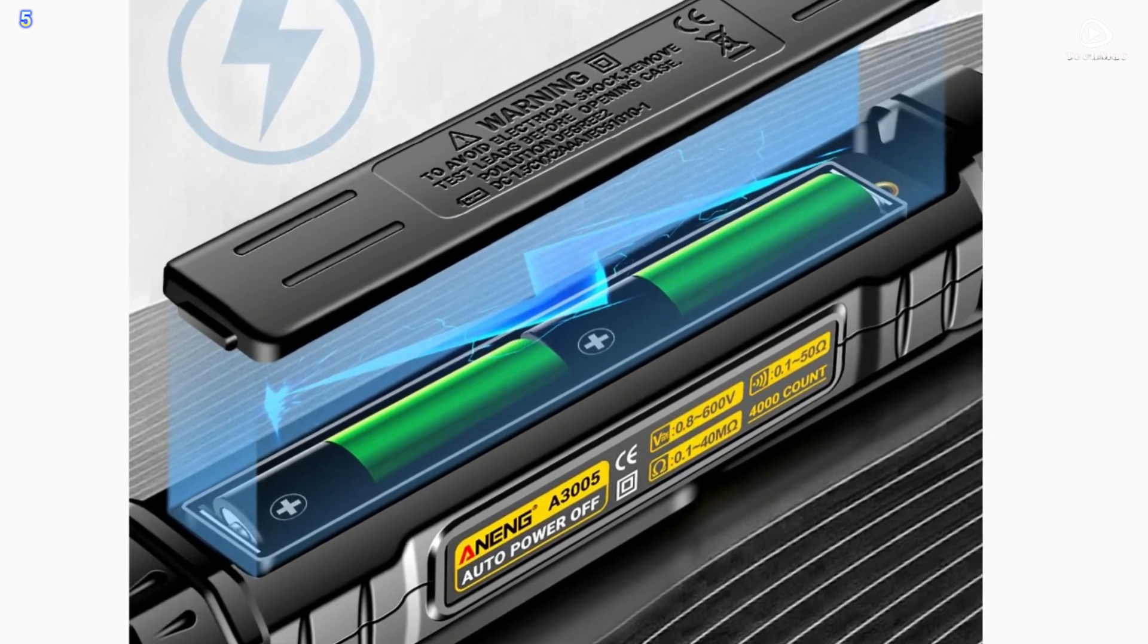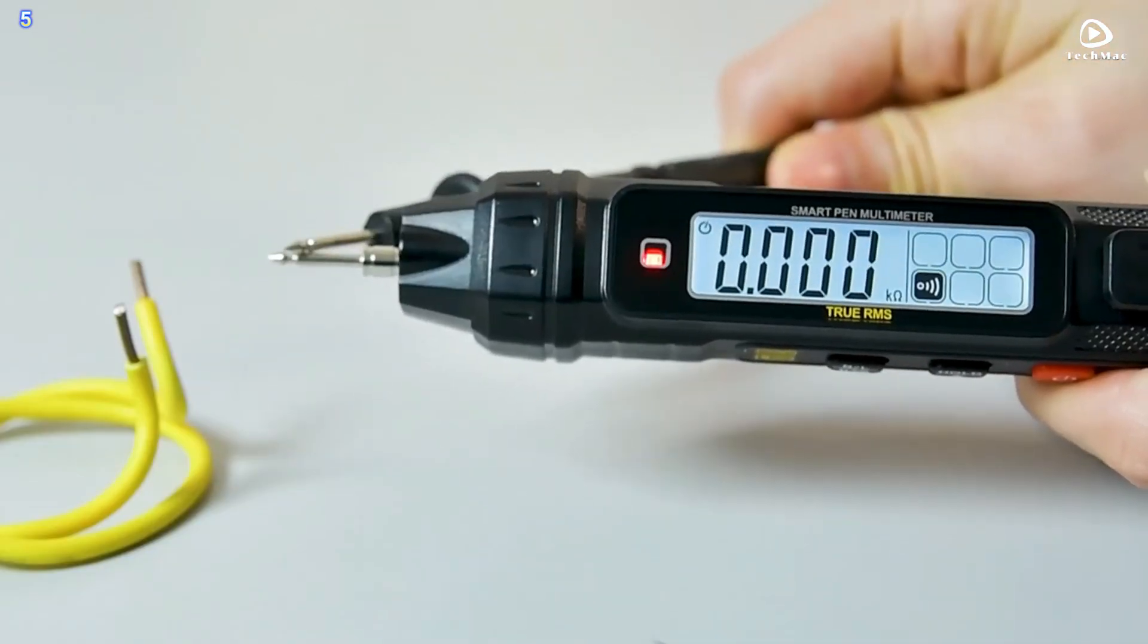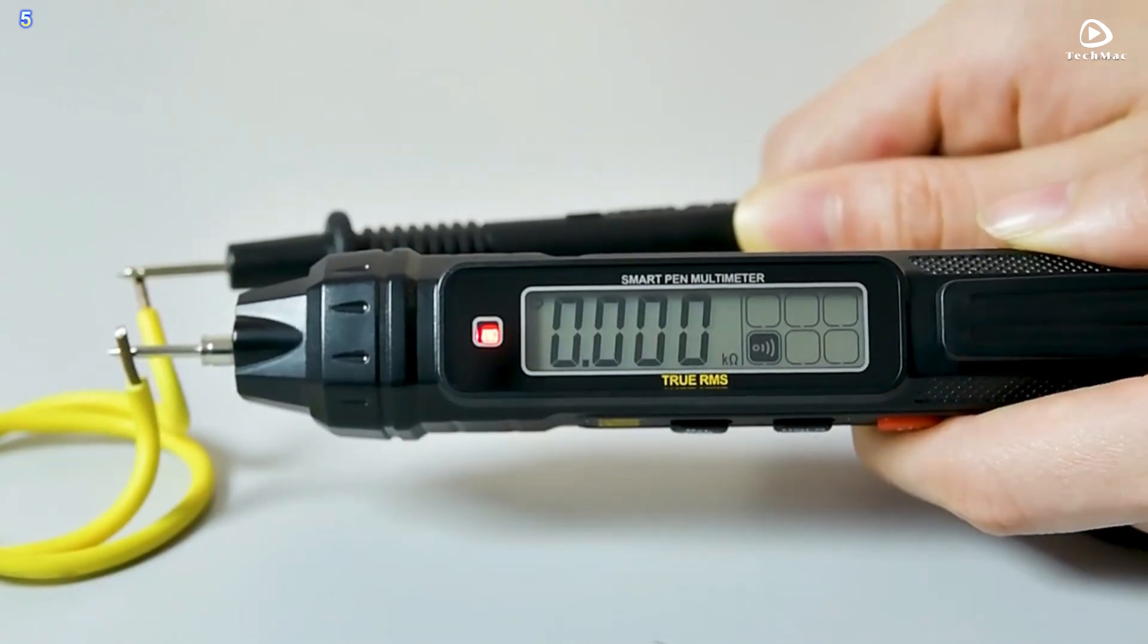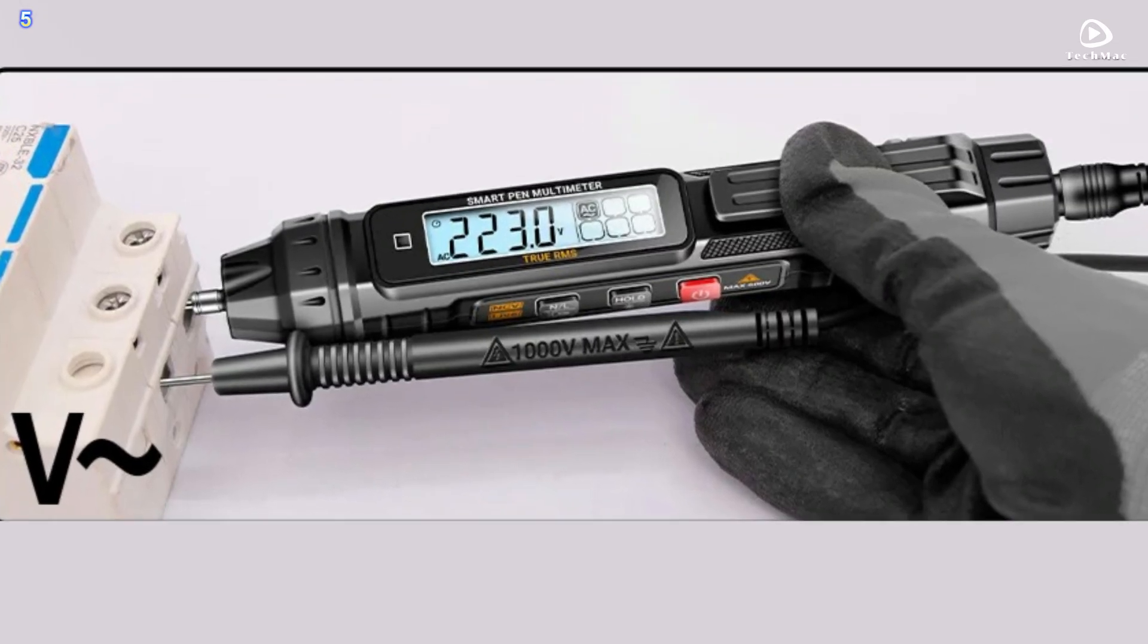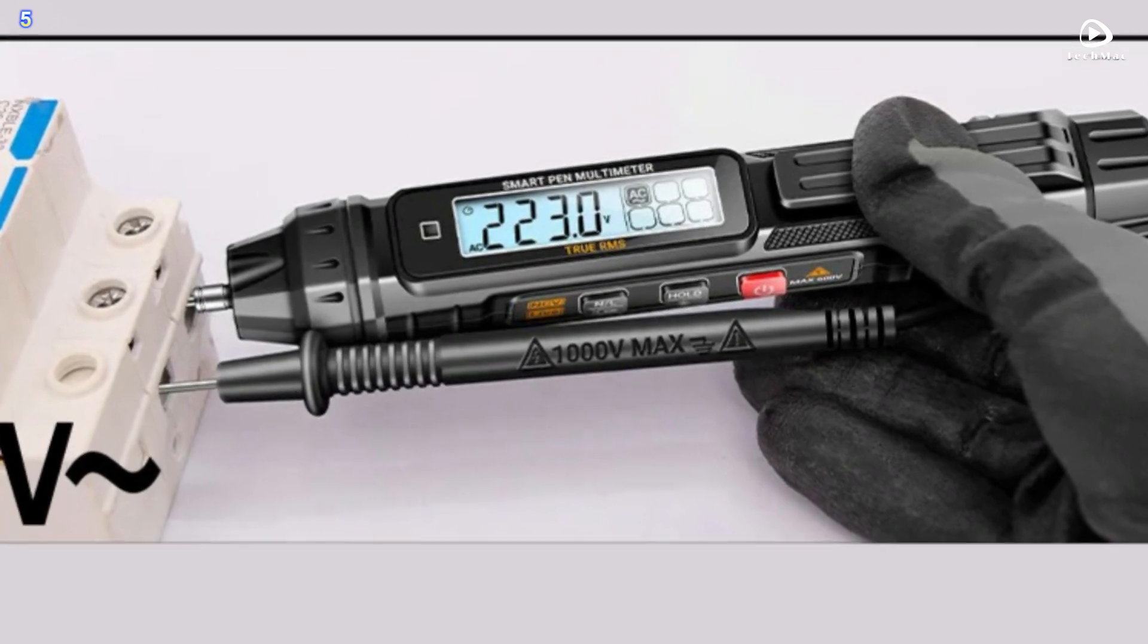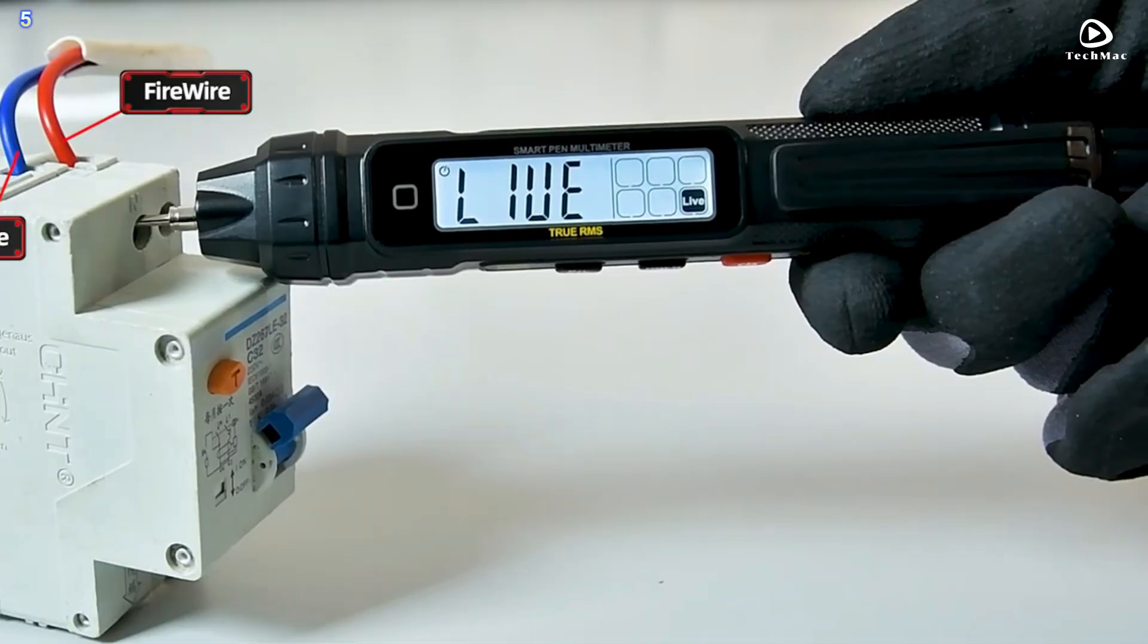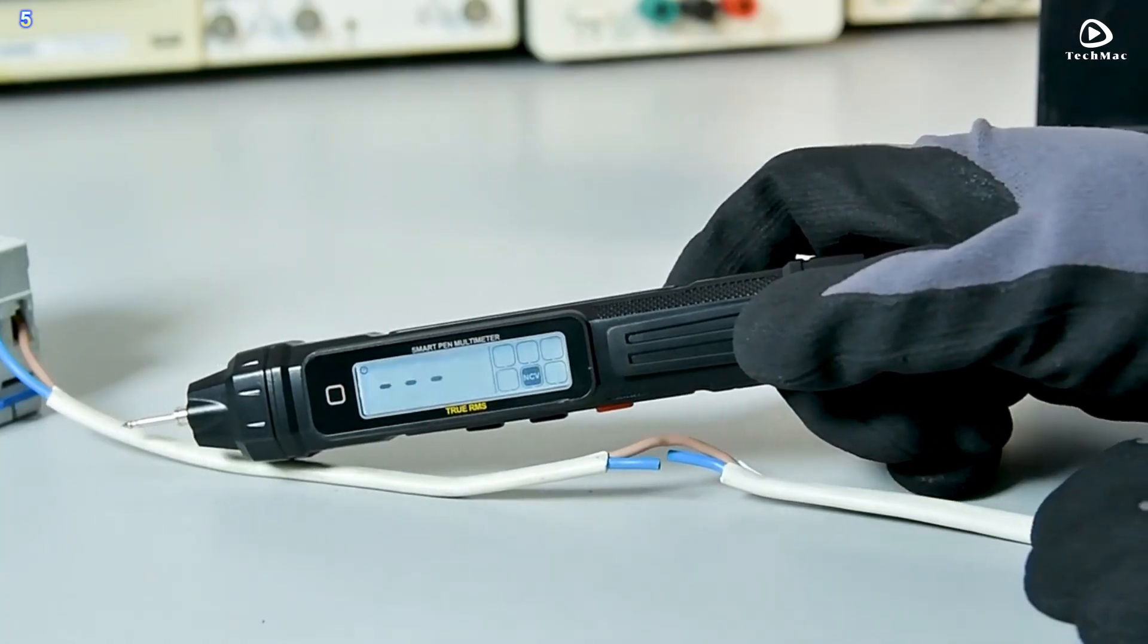This new type of meter also automatically identifies DC voltage, AC voltage, resistance, and continuity without any selection, besides the function manually switching to measure electric field induction and fireline discrimination.